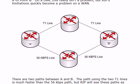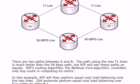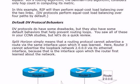In this diagram there are two paths from A to B — one over a couple of T1 lines and one over a couple of 56K lines. We can pretty much guess which one is fastest, but the problem is RIP is going to look at these and consider them equal. RIP will then perform equal cost load balancing over those links, and in today's delay-sensitive traffic-filled world with voice and video traffic, that's not something we want on our wide area network.